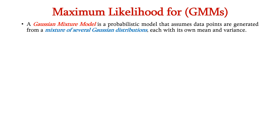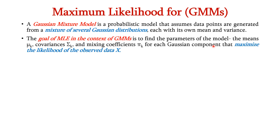First let us understand the likelihood function for GMMs. We know that a Gaussian mixture model is a probabilistic model that assumes the data points are generated from a mixture of several Gaussian distributions instead of a single distribution, and each will have its own mean and variance. The goal of MLE in the context of GMMs is to find the parameters of the model, namely the means μk, covariances σk and mixing coefficients πk for each Gaussian component.